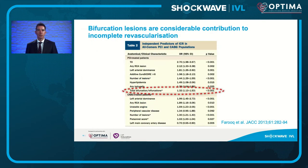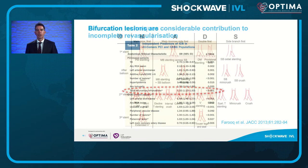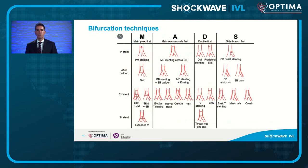Bifurcations were more likely to be associated with incomplete revascularization, and we know patients do less well long-term with incomplete revascularization. There are many different bifurcation techniques available, but this shows us there are far too many - there's no one clear technique for all scenarios. I'll try to distill these down into a more simple approach.